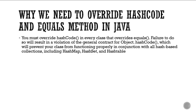Next question: Why do we need to override hashCode and equals methods in Java? We must override hashCode in every class that overrides equals and vice versa, because failure to do so will result in a violation of the general contract of the Object.hashCode method. This will prevent your class from functioning properly in conjunction with all hash-based collections including HashMap, HashSet, and Hashtable. Overriding only one of the two methods will create many problems.